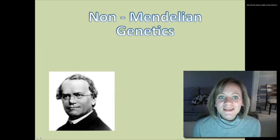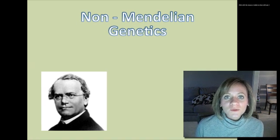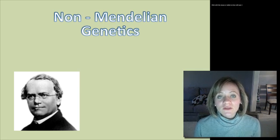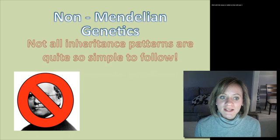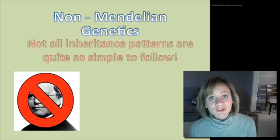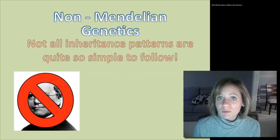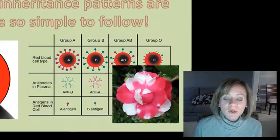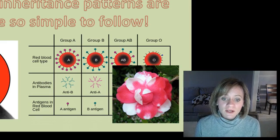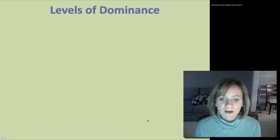Hi class. Welcome to this screencast on non-Mendelian genetics. So far we have really only looked at some pretty basic traits that Mendel studied — those either-or characteristics that were very easy to follow. But since Mendel, scientists have learned a lot about genetics and we have found that not all inheritance patterns are quite so simple to follow. During this video we're going to learn about a couple different ways that traits can be inherited, including how blood types are inherited and how certain types of flower color are inherited.